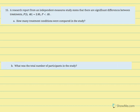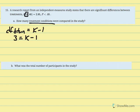We're asked how many treatment conditions were compared. Treatment conditions are represented in DF between, which is the numerator. The equation is DF between equals k minus 1, and that equals 3 here. So 3 equals k minus 1, meaning k equals 4. There were four treatment conditions in this study.